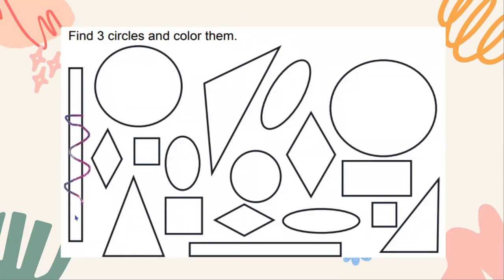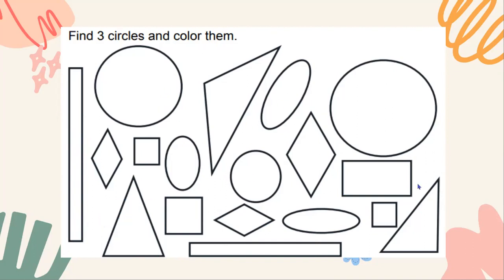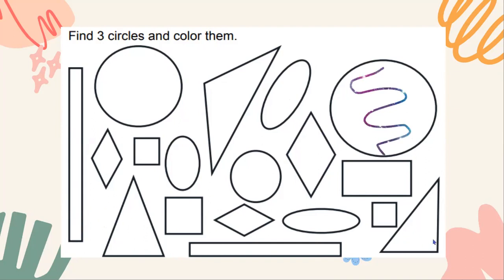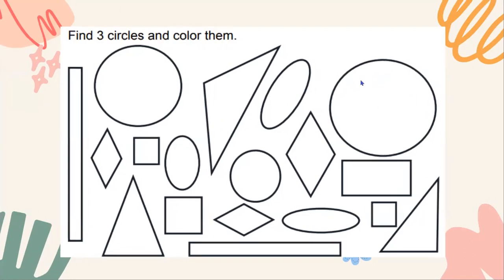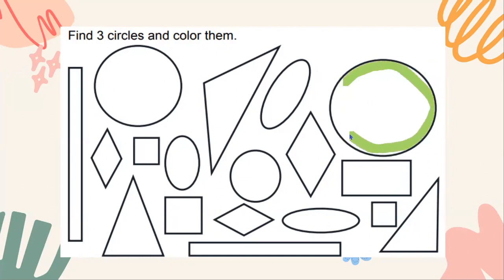Is this one over here a circle? You guys said it's not a circle. What about this one? Good job, I see a lot of thumbs down. What about this one — is this a circle? No. What about this one over here — is this a circle? I love seeing all those thumbs up. You guys are right, this one over here is a circle. I'm going to color this one a nice green color. We have a nice big circle here.